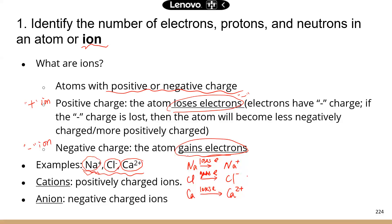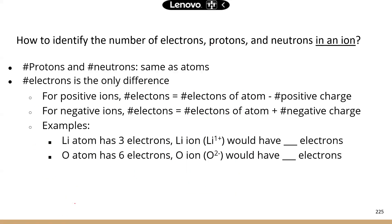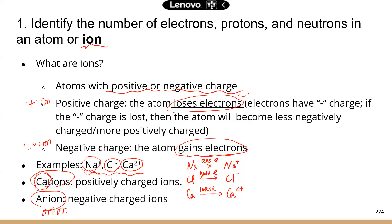We call positively charged ions cations, and negatively charged ions anions. There's a trick: cations — cats — cats are warm, they give you a positive feeling, so cations are positive ions. Anions is spelled like onion, and when you cut an onion it makes you cry, so anions are negatively charged ions.